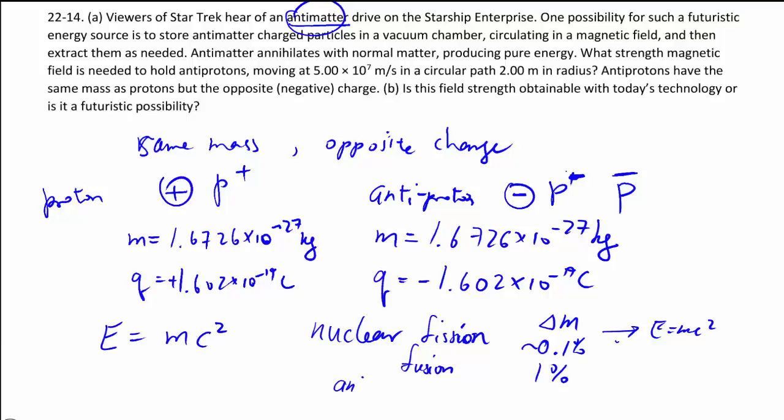Whereas if you have antimatter and matter, you can annihilate 100% of the mass and you get lots and lots of energy.